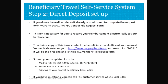To set up your direct deposit for the VA, if you haven't already done so, you will need to complete and return VA Form 10091. You will need your bank's name, your account number, your routing number, and whether the account is a checking or savings account to complete the form. To obtain this form, you will contact the Beneficiary Travel Office or go to www.va.gov/find-forms and search for 10091. It will be the first form and it will be titled FSC Vendor File Request. You need to do this in order to set up your direct deposit for the electronic fund transfer.